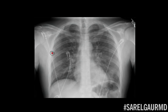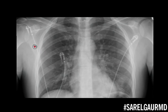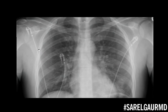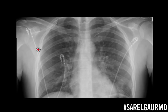Here we go, case one — cough and shortness of breath, young male. In order to understand abnormal, you first have to understand normal. These are the pulmonary vessels. You can see that they're branching as you come out to the periphery, and they're getting smaller and smaller coming out to the pleural edge here. So that's a normal finding.